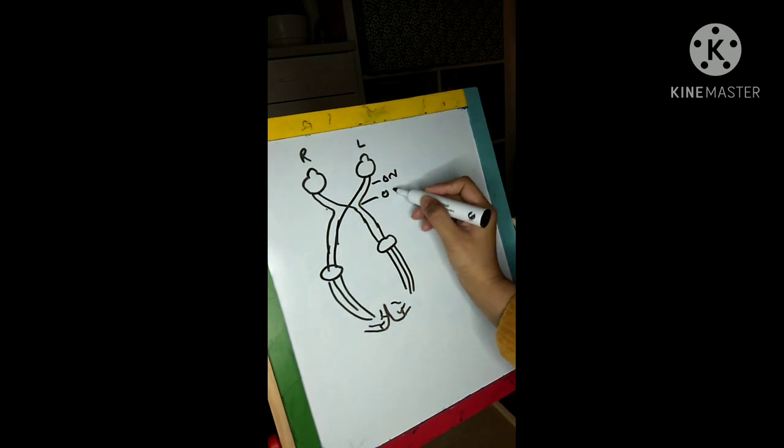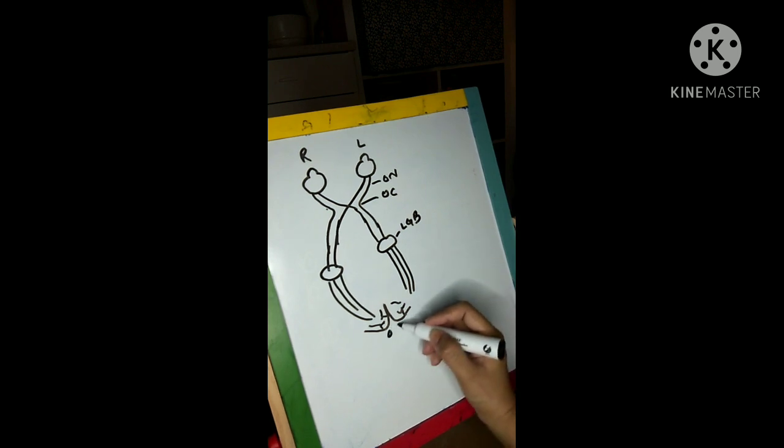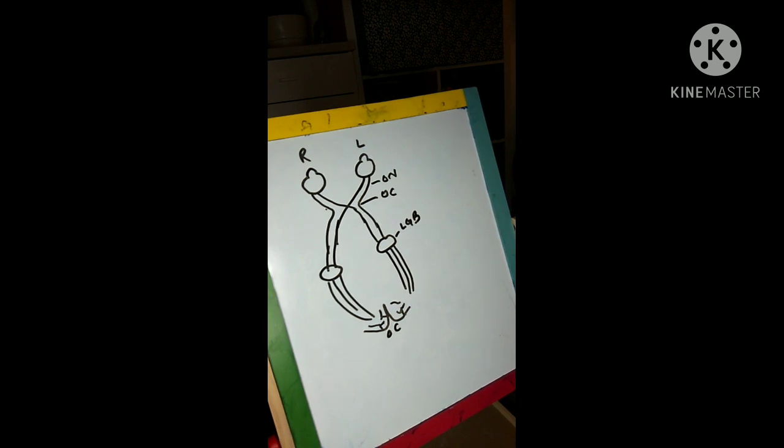So this is the optic nerve. This is the optic chiasma. This is the lateral geniculate body. And this is the occipital cortex. So this is basically the visual pathway.